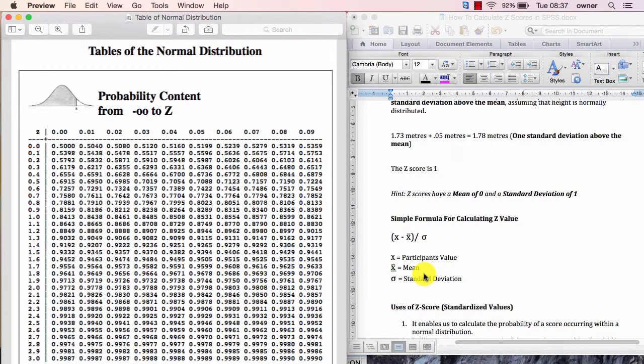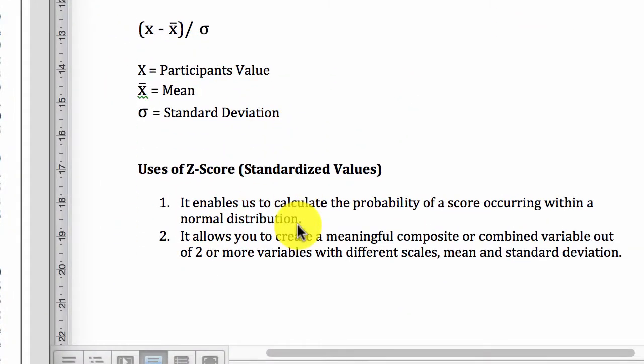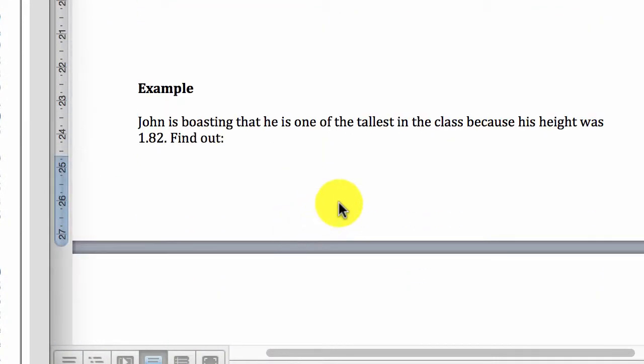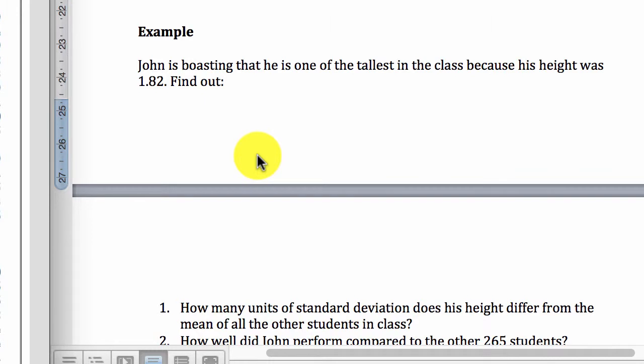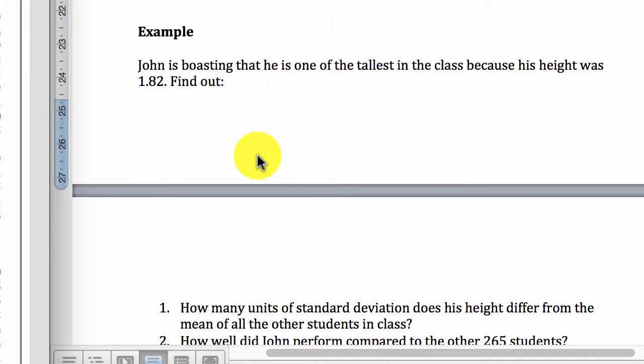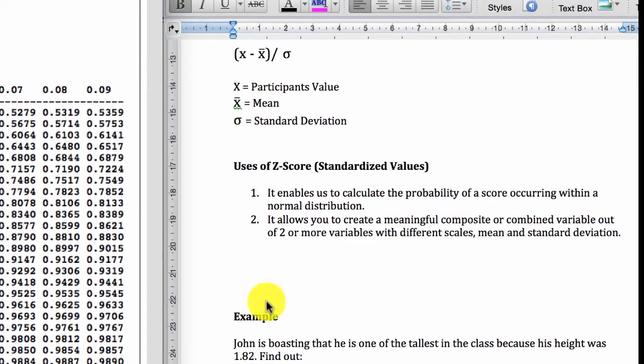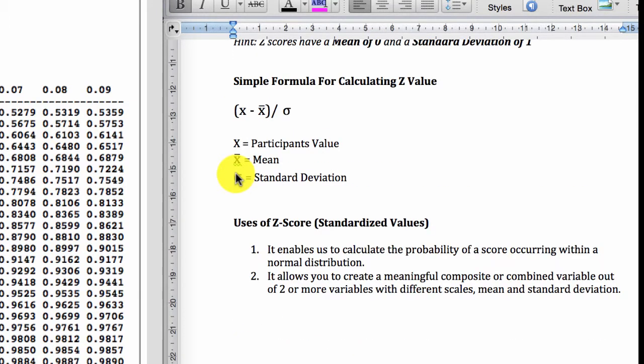Let's look at another example which will give you an in-depth knowledge of calculating the Z score. Let's go to this example here. John is boasting that he is one of the tallest in the class because his height was 1.82. Now, we need to find out how many units of standard deviation does his height differ from the mean of all the other students in class. We use this formula up here. We already know the X value. The X value is 1.82 and the mean is 1.73.